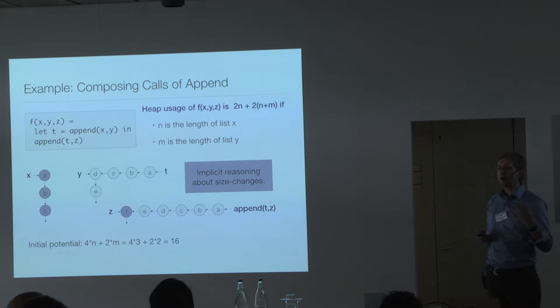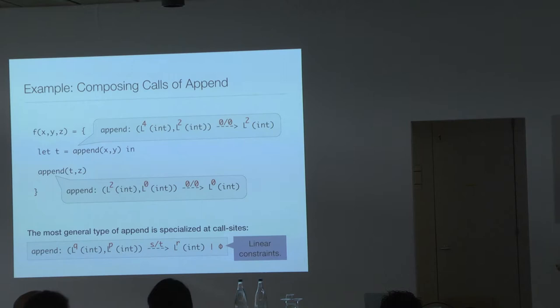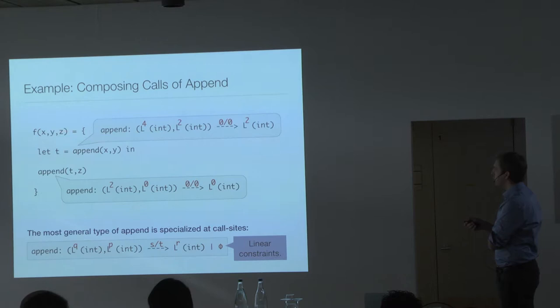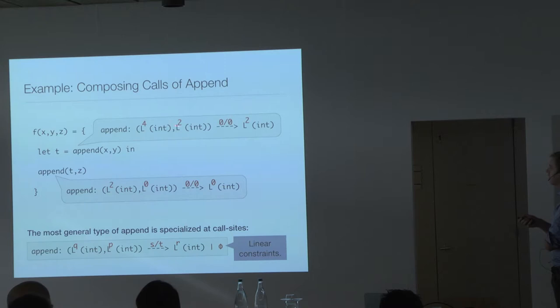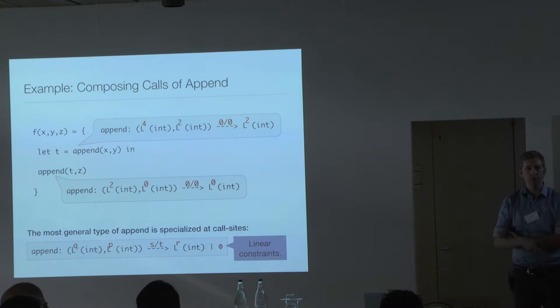In the type system, the type for append says: take two lists of integers as input with 4 potential units per element on the first argument and 2 per element on the second, and produce a list with 2 units per element. These annotations are independent of the actual size — they always work. There are also constant potential values not attached to any specific data structure.